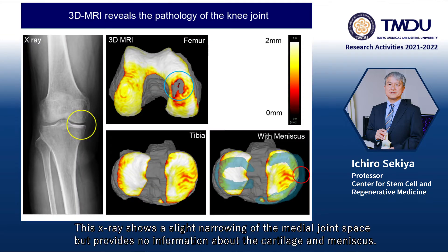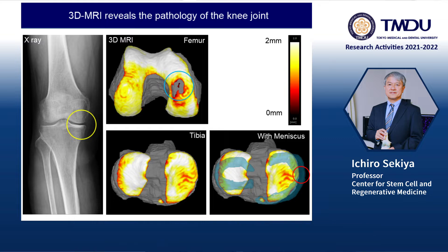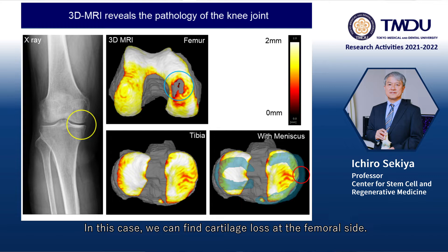This X-ray shows a slight narrowing of the medial joint space but provides no information about the cartilage and meniscus. The 3D MRI demonstrates cartilage thickness. In this case, we can find cartilage loss at the femoral side.